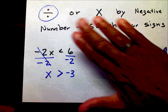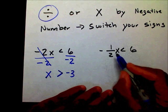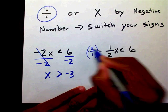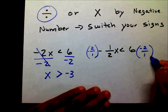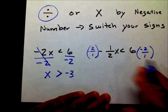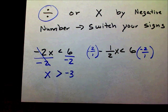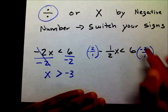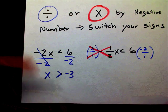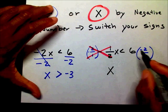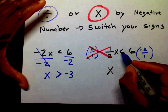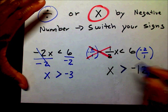If I multiply by a negative — if you don't know what I just did, watch my video on solving one-step equations. If I multiply both sides by a negative, they cancel each other out. That leaves you with x on the left and 6 times negative 2 is negative 12. So I need to switch my sign from less than to greater than. That's the end.